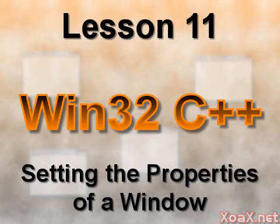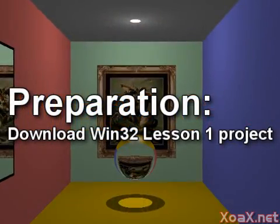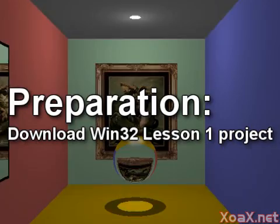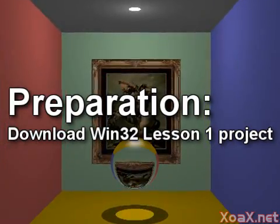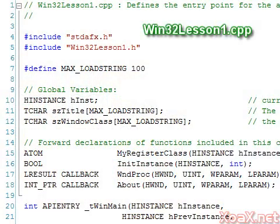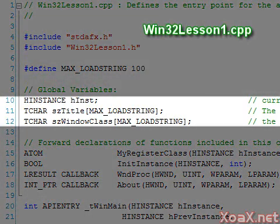Lesson 11: Setting the Properties of a Window. To follow along with this lesson, you will need the project from Win32 Lesson 1. Here we give a brief overview of the parts of the program that are used to set and change the properties of a window. We will go quickly, so don't worry if you don't understand it all. We will focus on the parts we want to use later as they come up.